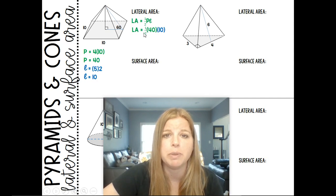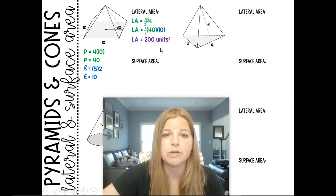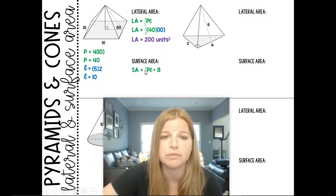So the lateral area would be 1 half times 40 times 10, which ends up giving us 200 units squared. Now surface area means we take this answer of 200 and we simply add it to the area of the base.